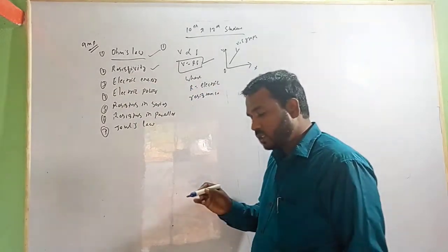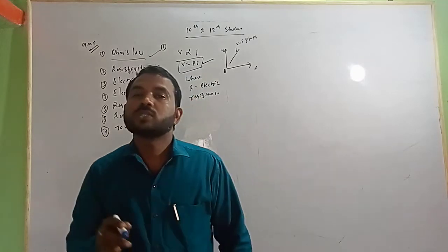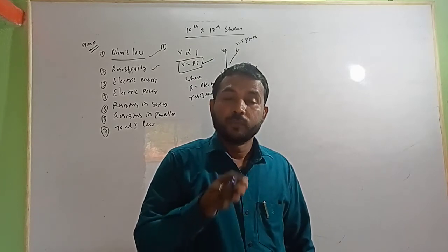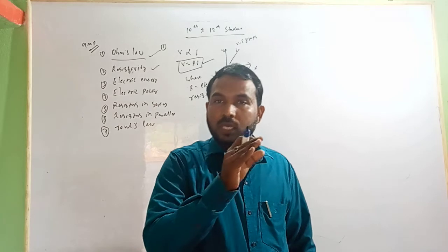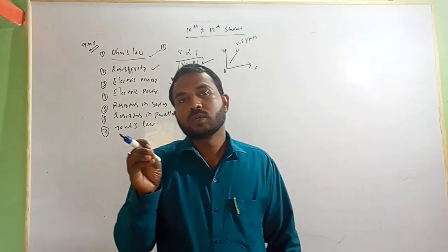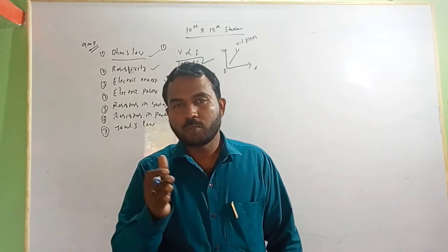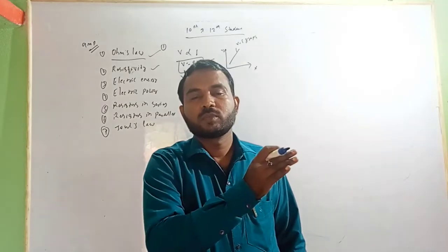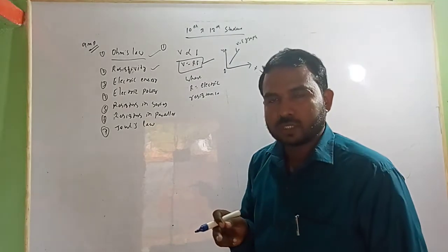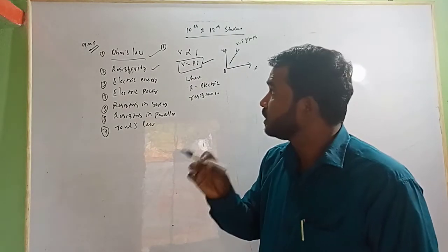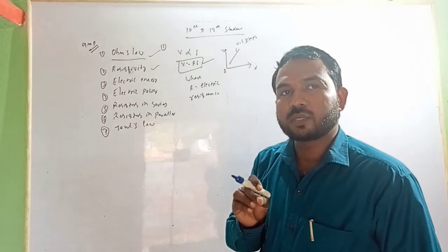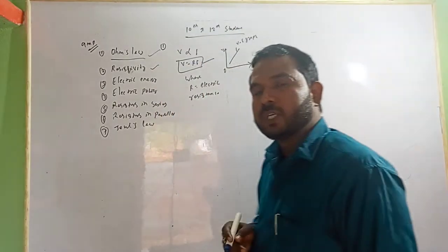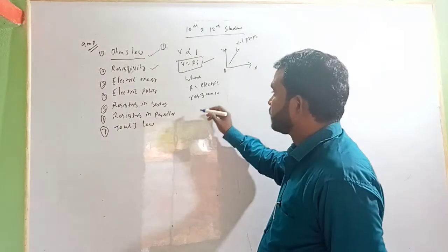Next, resistivity. Resistivity is the property of a material which opposes the flow of electrons in the conductor. Whenever electrons move in the conductor, resistance functions to oppose them. But due to the pressure of the potential, electrons move in the conductor. Resistivity is also the reciprocal of conductivity.